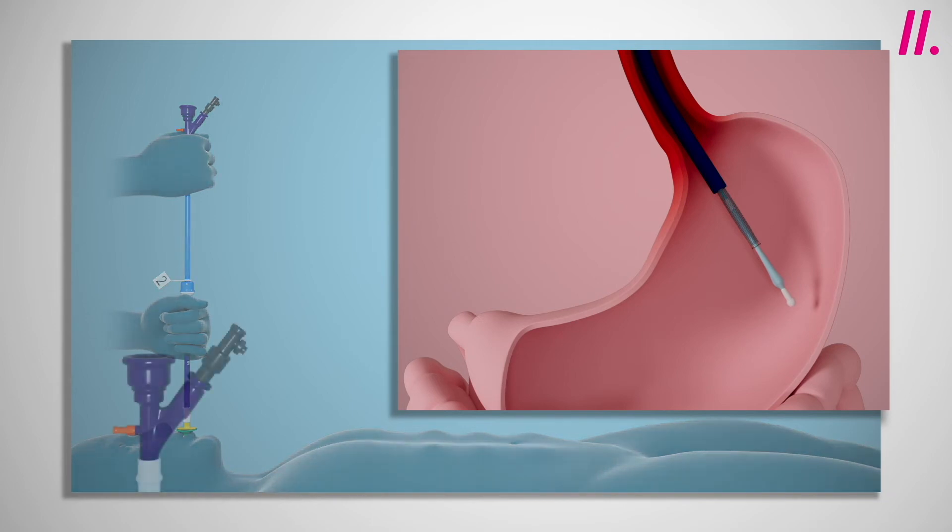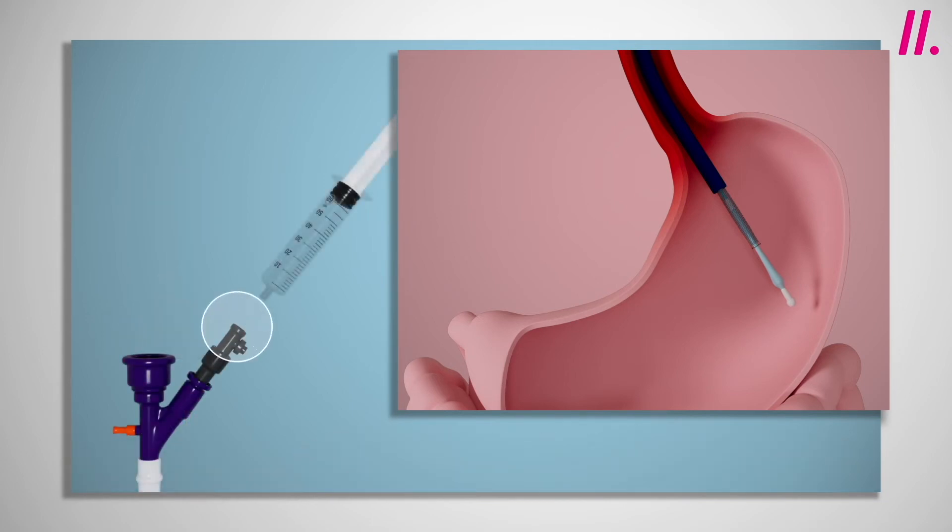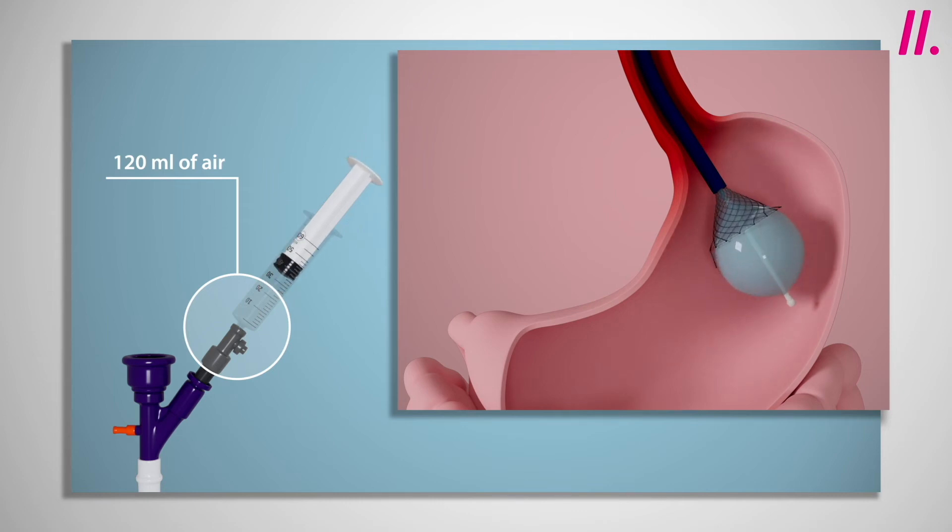120 ml of air should then be used to inflate the balloon. The balloon valve is one way and allows the 60 ml syringe provided to simply be pumped twice, without need for removing in between.